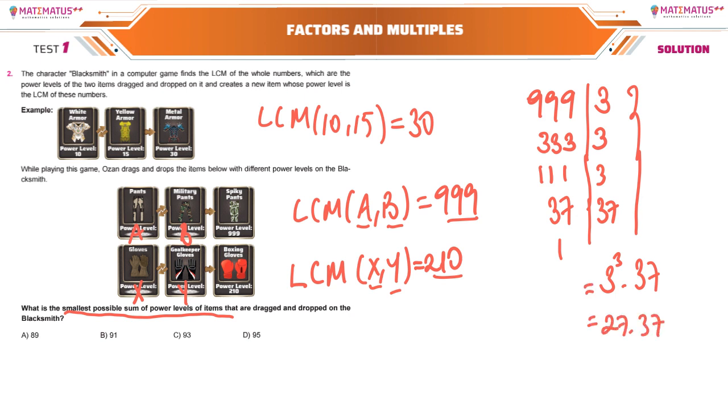Now we have 210. We have to find the factors. 2 and 105, 3 and 35, and it's divisible by 5. First we get 7, and if divisible by 7 we get 1.